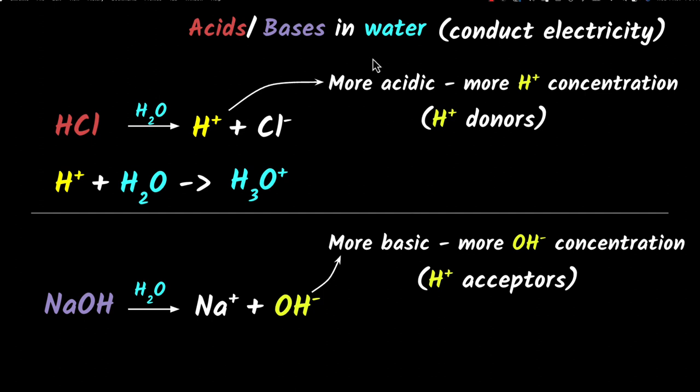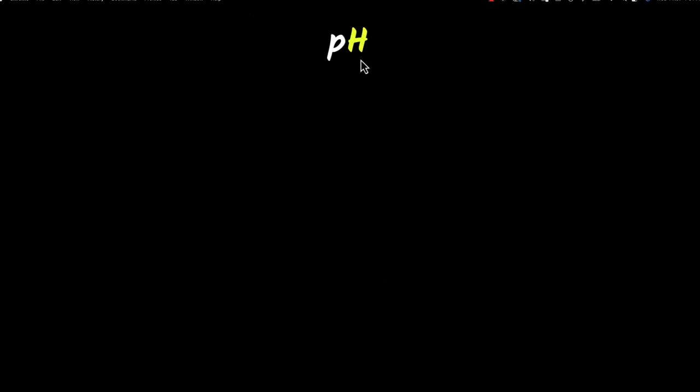How do we give a number to indicate how acidic or how basic a solution is? That number is given by a quantity called pH. You can think of pH as an indicator of H+ concentration in the solution. It has a formula, and from that formula it turns out that if there is more H+ concentration, you will get less pH.